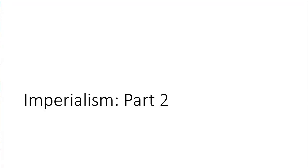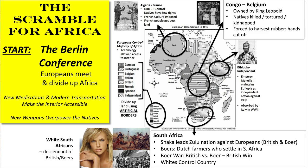This is part two of the review of imperialism. The first place we're going to take a look at that was a target of European imperialism was Africa, the African continent.